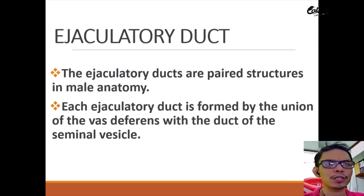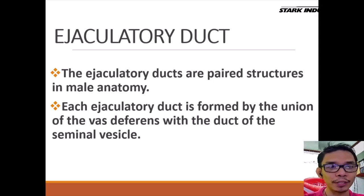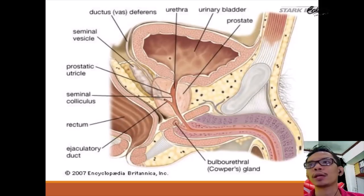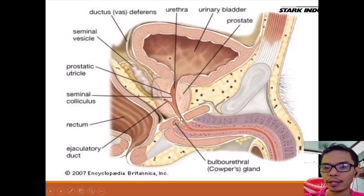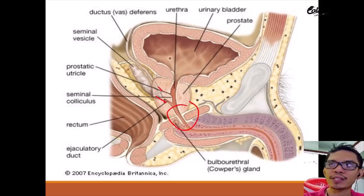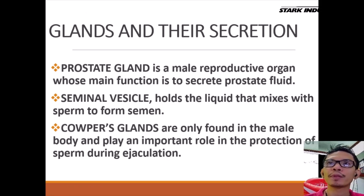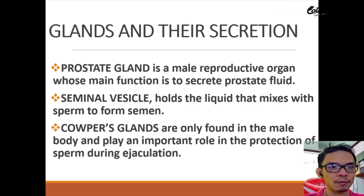The ejaculatory duct consists of paired structures after the vas deferens. The sperm cell becomes semen at this part, with the help of glands attached to the ejaculatory duct. The important glands attached to the ejaculatory duct are: the seminal vesicle, the prostate gland, and the bulbourethral gland — also known as Cowper's gland. The secretions of these three glands are very important for nutrition, protection, transportation, and survival of the sperm.